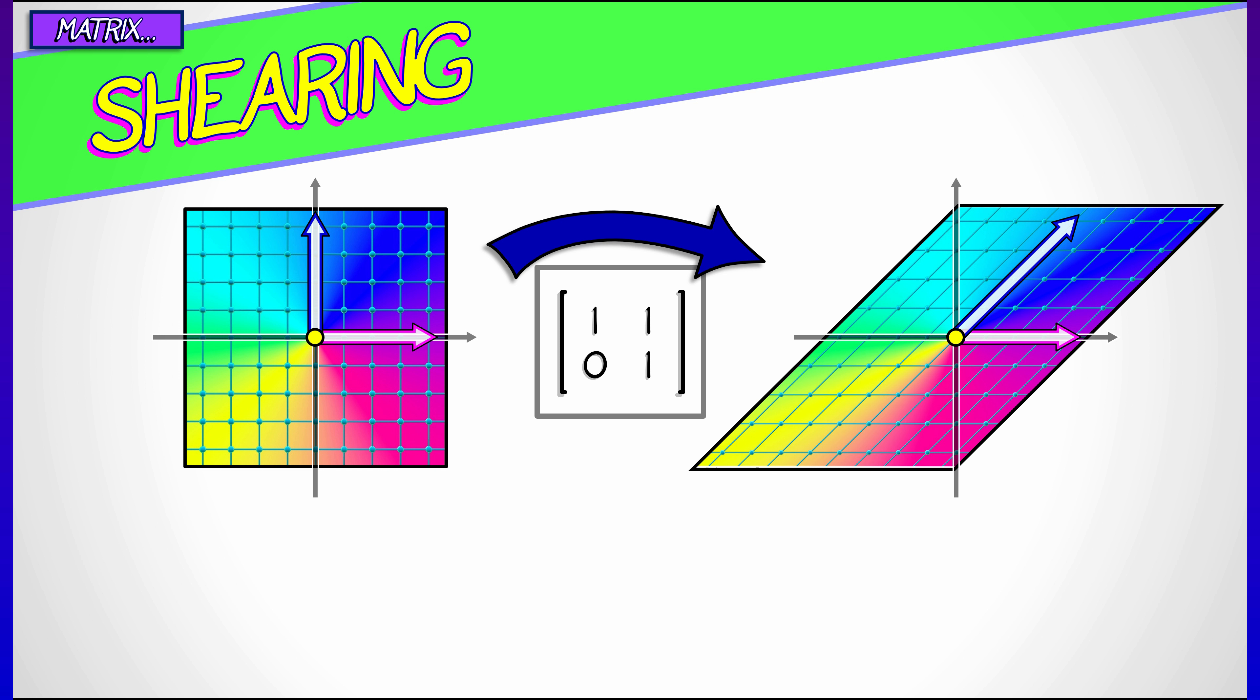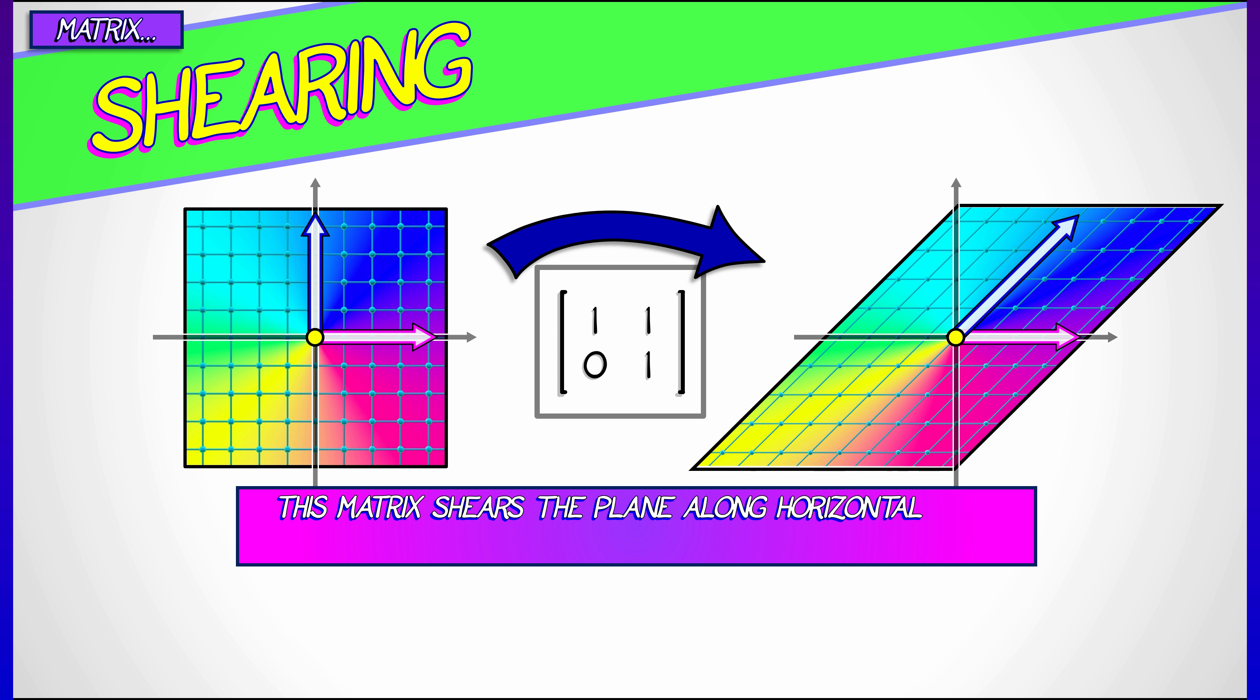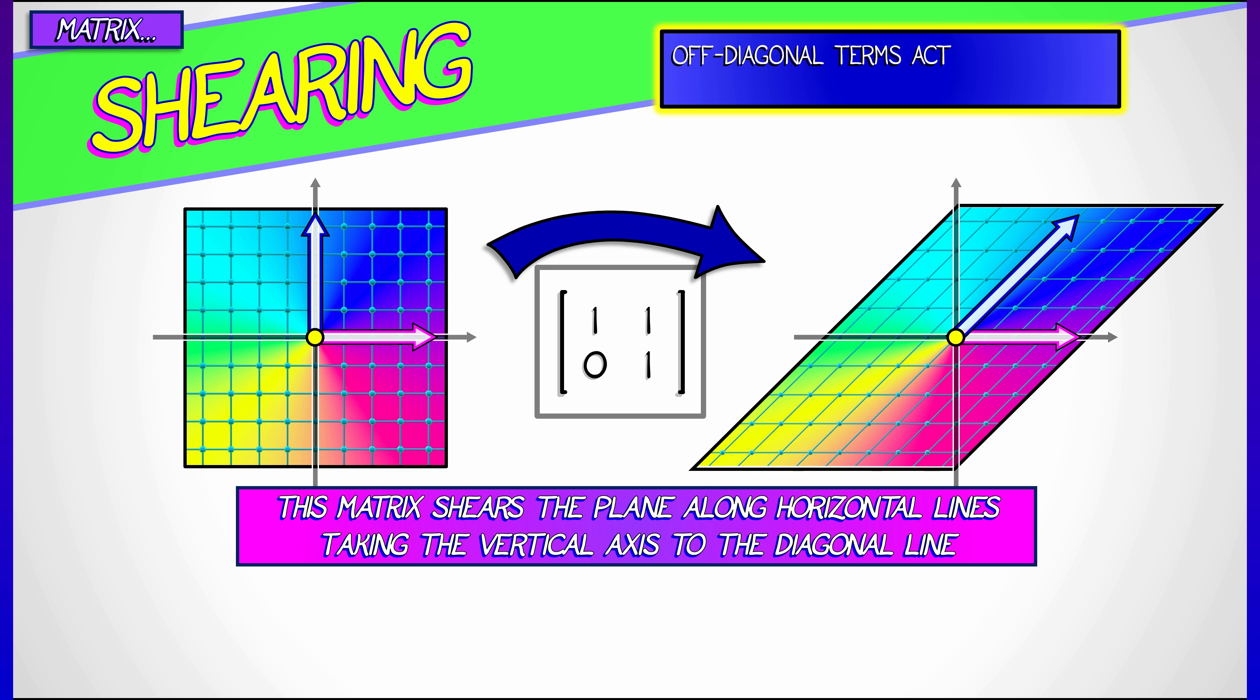Now, if we extend this to the entire rest of the plane, then what is happening is that the horizontal lines are preserved, but the vertical lines are getting sheared over to match along the diagonals. Along that line, y equals x.